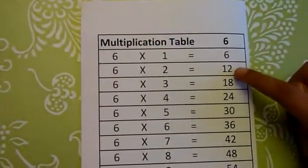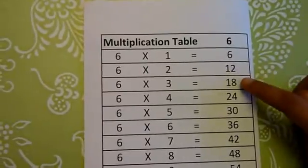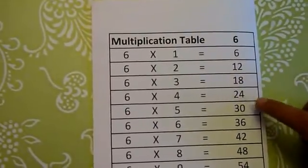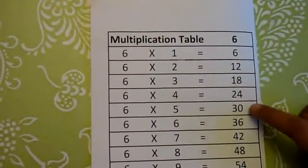6 1s are 6, 6 2s are 12, 6 3s are 18, 6 4s are 24, 6 5s are 30,